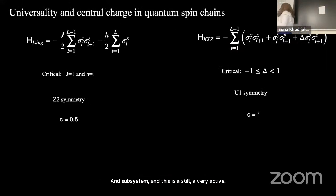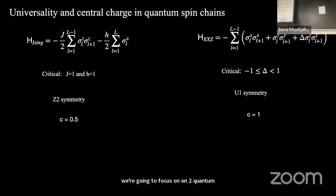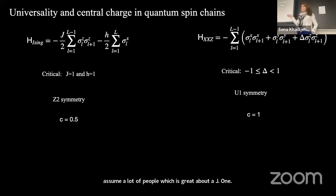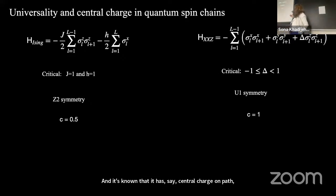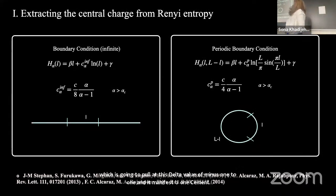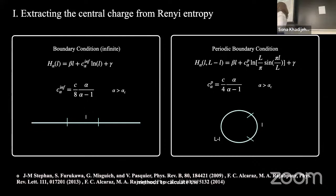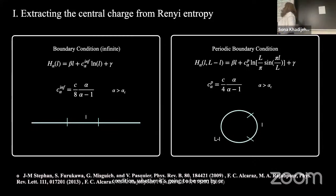In this talk and experiment, we are going to focus on two quantum spin chains. The first is the transverse-field Ising model, which is solvable at J equal to 1, manifests Z₂ symmetry, and has a central charge of one-half. The second is the XXZ model, which is solvable at delta values from minus 1 to 1, manifests U(1) symmetry, and has an associated central charge of 1. I will also discuss two different methods to calculate the entropy: for different boundary conditions—open or periodic—we calculate the probabilities of each configuration, compute the Rényi entropy in the local basis, and look at the scaling.